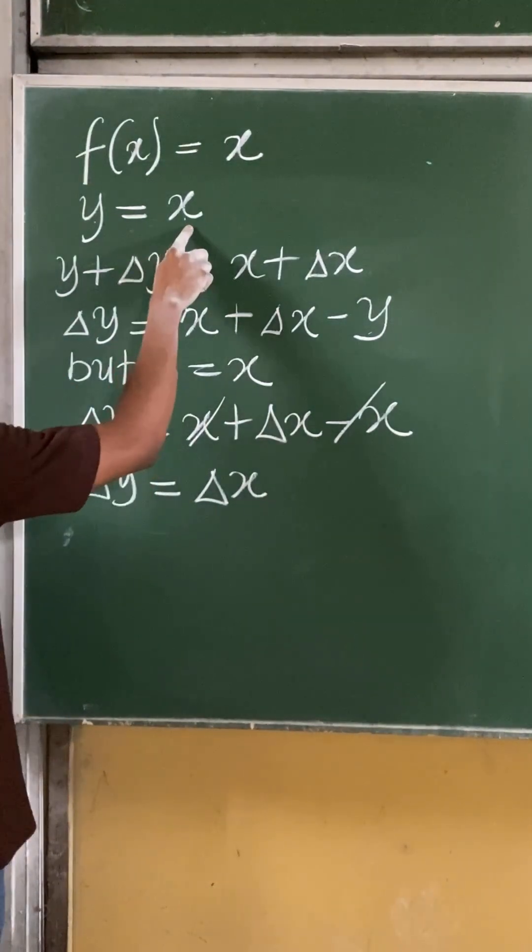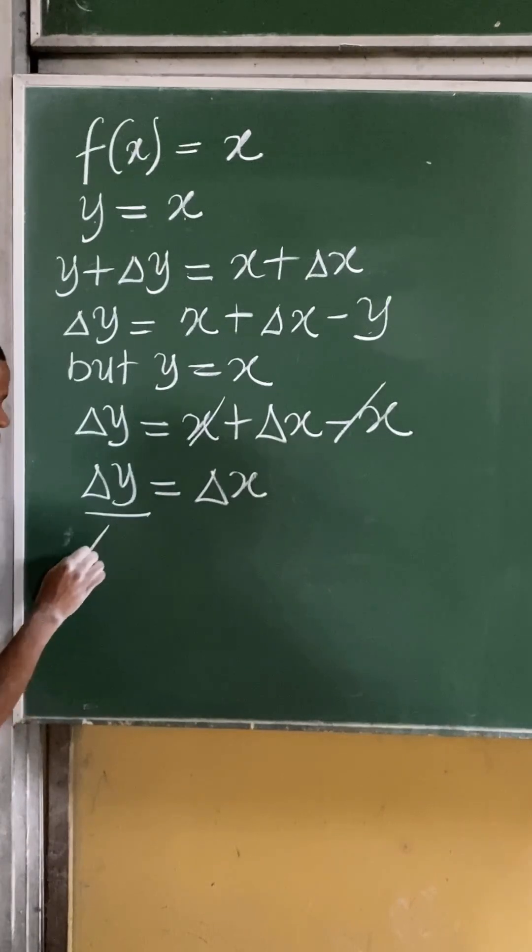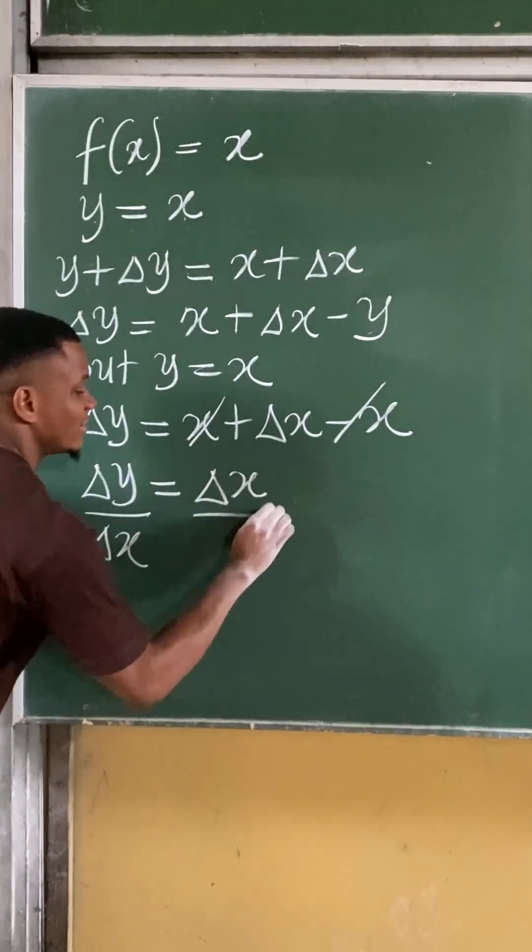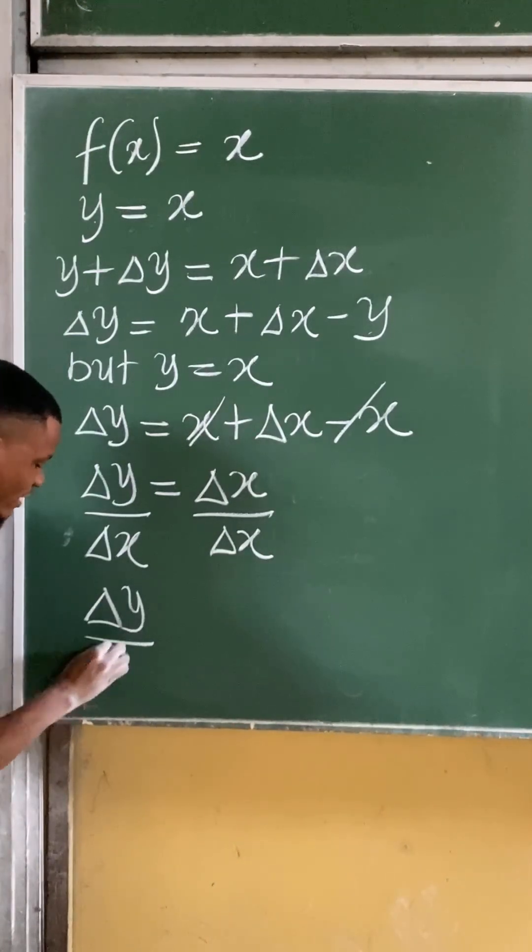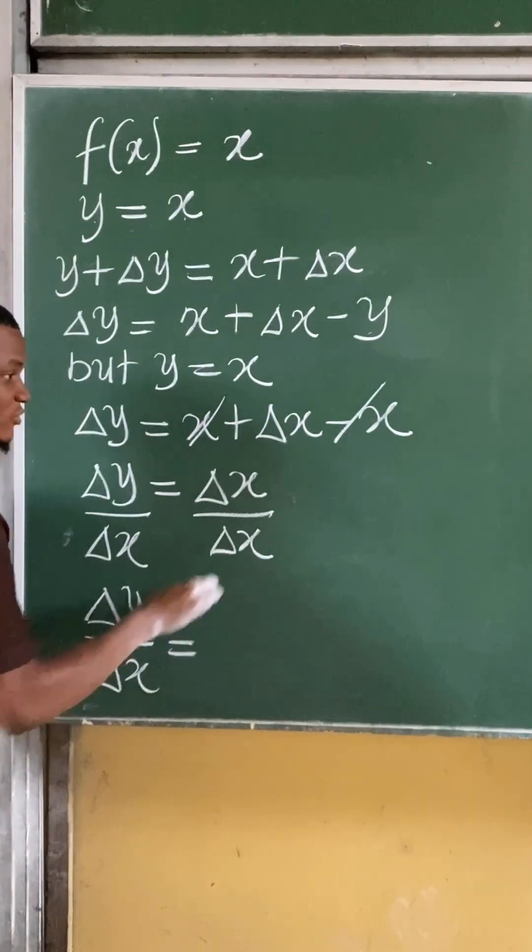To get the value of my derivative, differentiate this or divide by change in x. Divide here by change in x. I'll now have that change in y over change in x is equal to this.